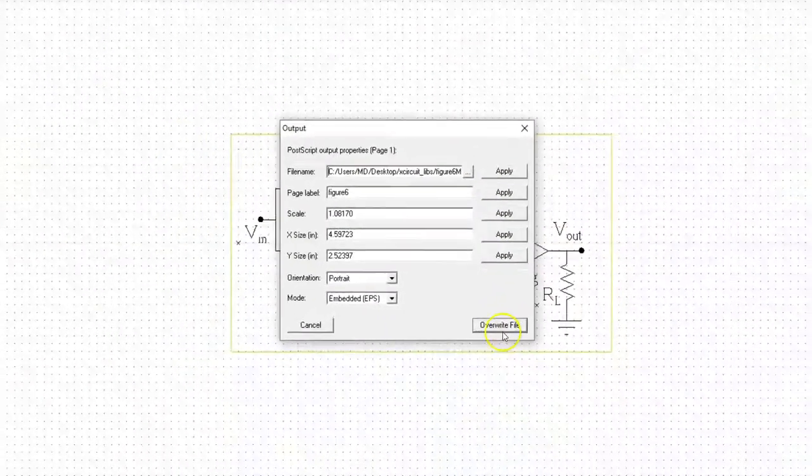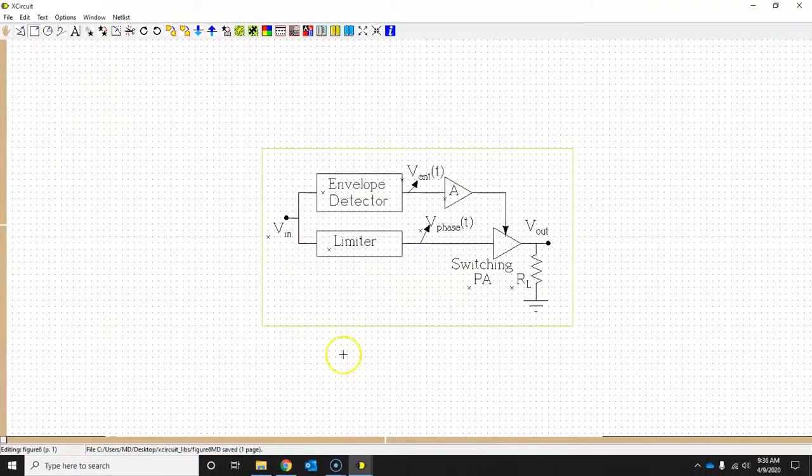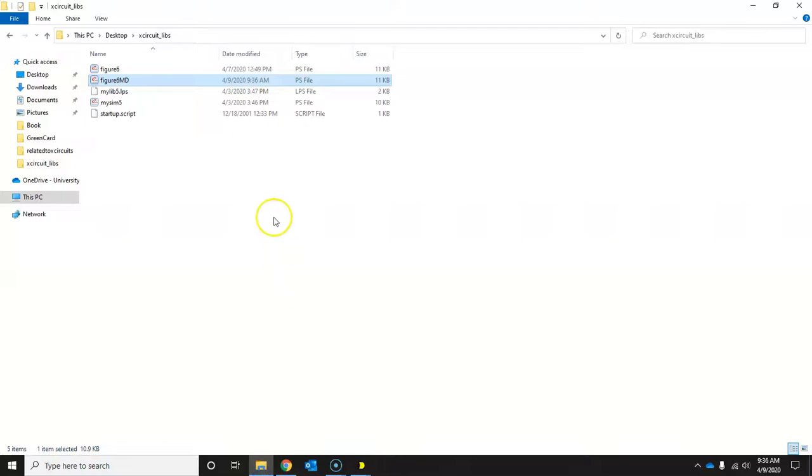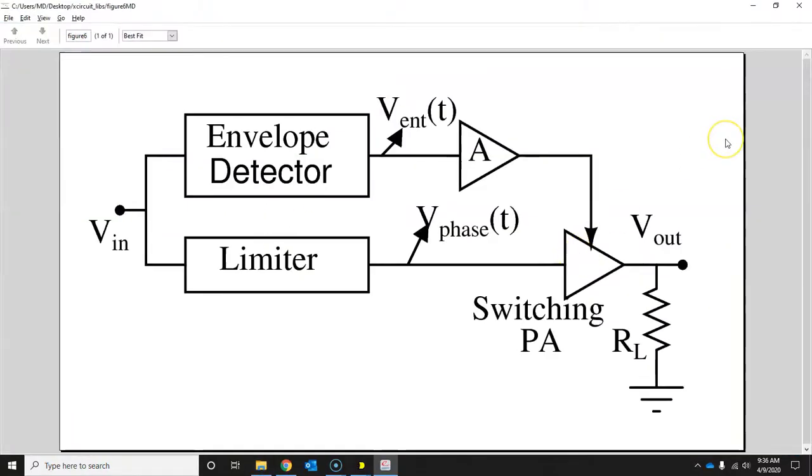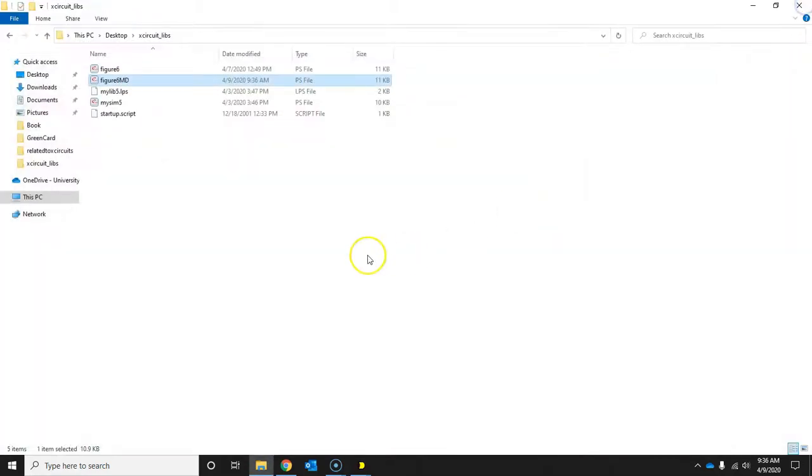So go ahead and write the output by clicking on right X-Circuit, and let's go ahead and say overwrite, and let's go to this folder, and reopen this, and lo and behold, this boundary is not there. So this is how you draw a bounding box.